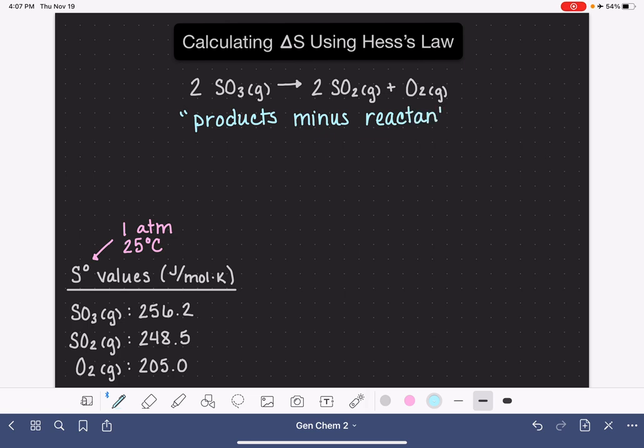This is how we use Hess's Law to calculate whether it's delta S or delta H or anything along those lines. Because we are calculating delta S using standard entropy values, this is actually going to be a delta S standard.